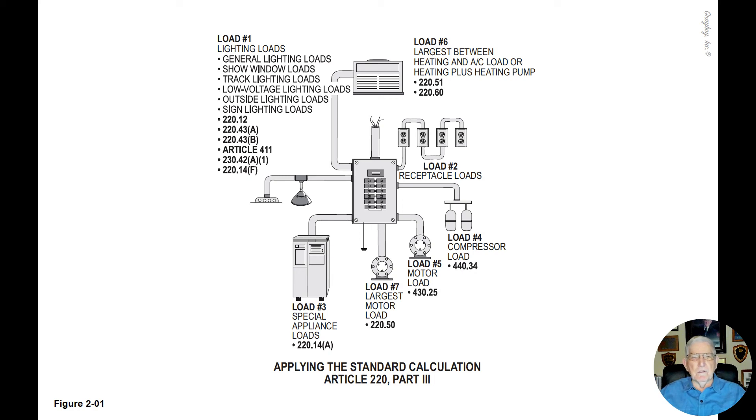This illustration deals with applying the standard calculation. Load one consists of the lighting loads. As you see in the illustration on the left-hand side top, the lighting loads consist of general lighting load, show window loads, track lighting loads, low voltage lighting loads, outside lighting loads, and sign lighting loads.